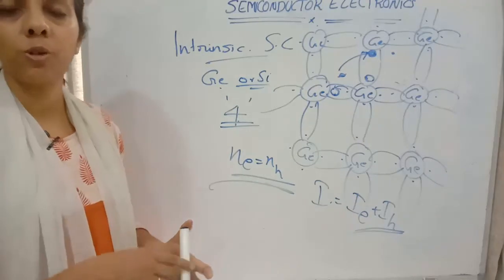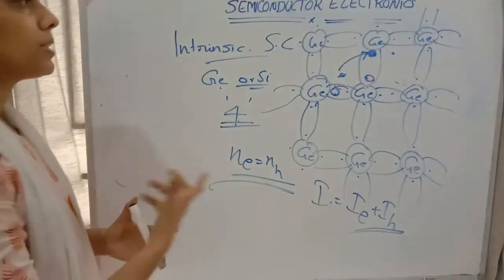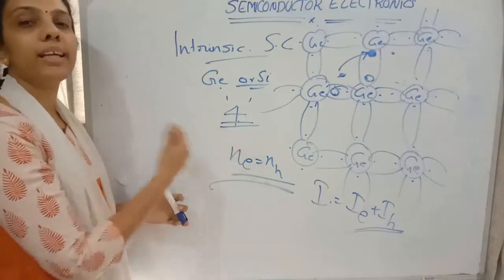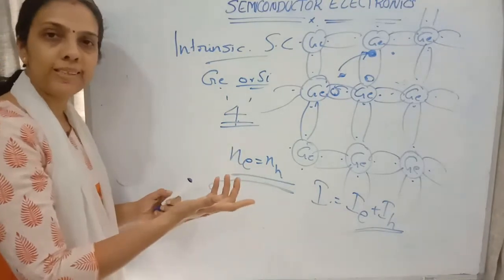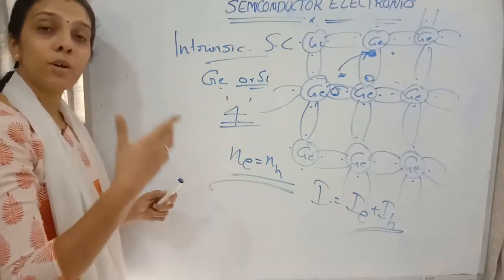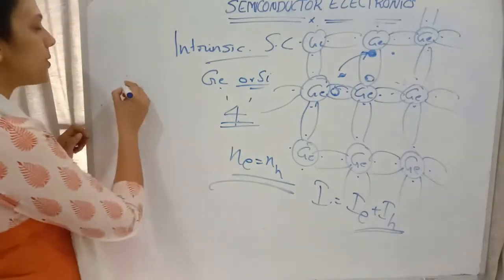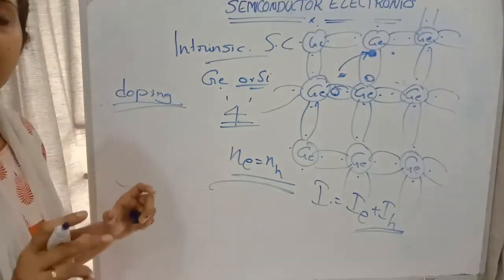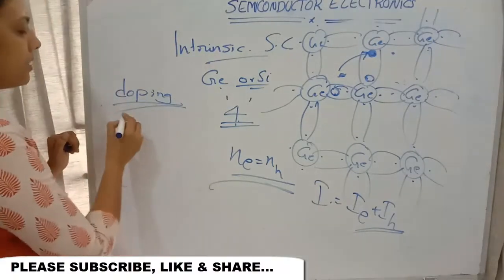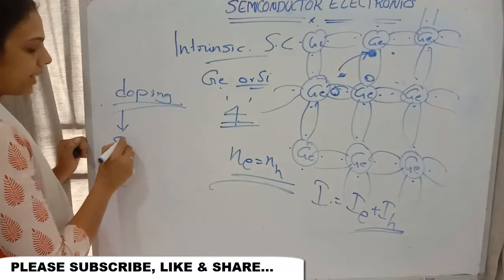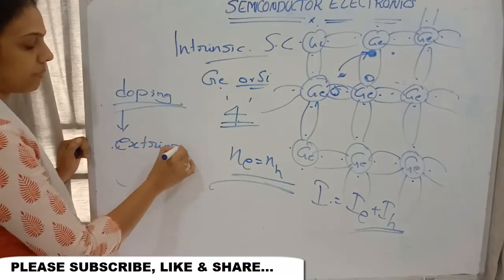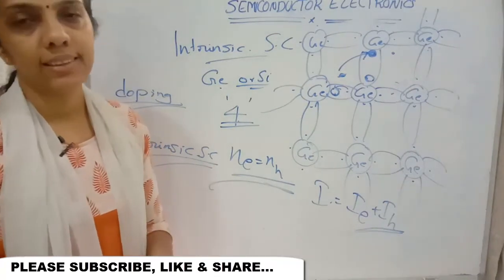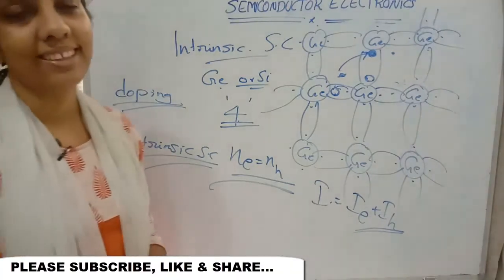Free electrons and holes are few in number in an intrinsic semiconductor, and recombination of holes and electrons also happens. To increase the number of charge carriers, we add impurity to the semiconductor. This process is called doping. Semiconductors with added impurities are called extrinsic semiconductors. We will learn more about extrinsic semiconductors in the next class.